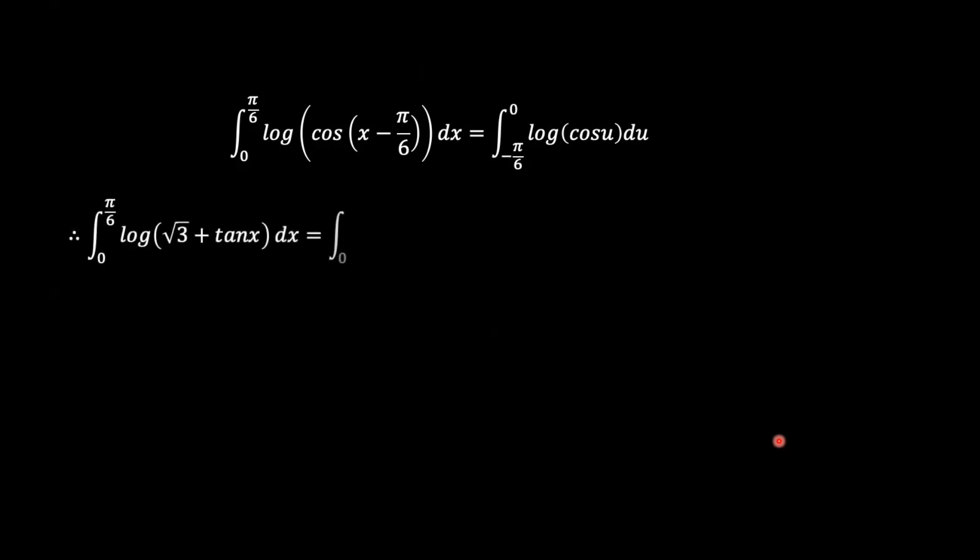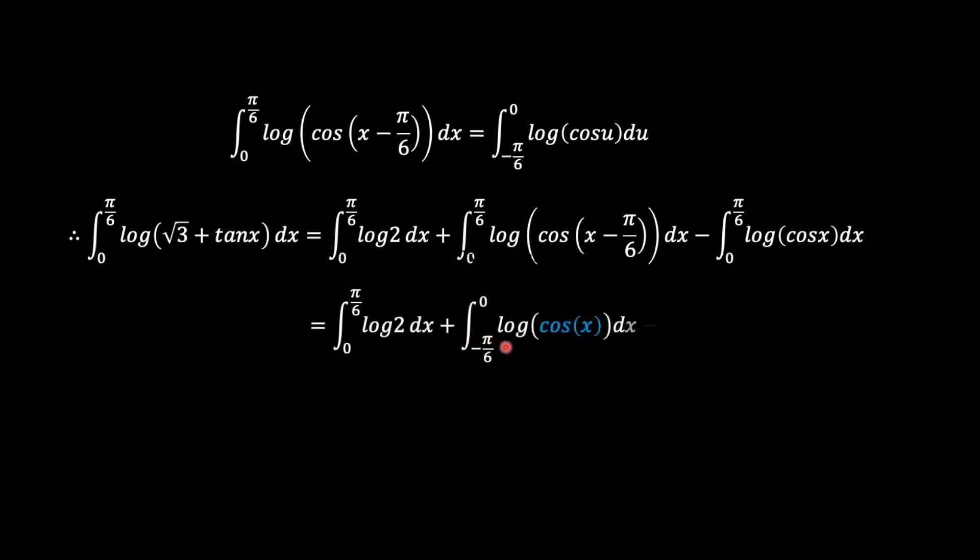So therefore our original integral, the integral of log root 3 plus tan x from 0 to pi over 6, is the same as the integral of log 2 plus the integral of log cosine x minus pi over 6 minus the integral of log cosine x from 0 to pi over 6. So the second integral, as we were able to show previously, is the same as the integral of log cosine x from negative pi over 6 to 0.